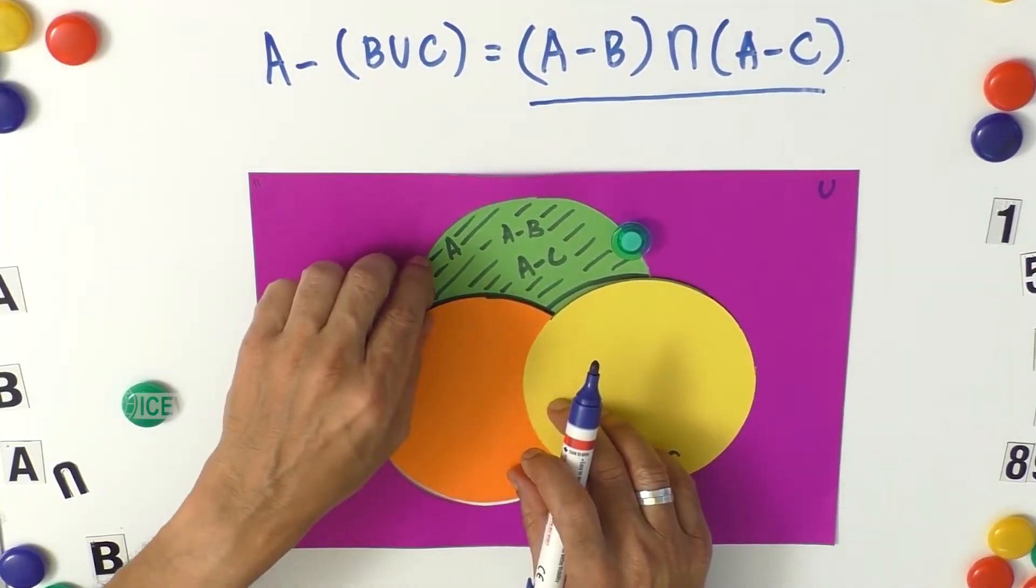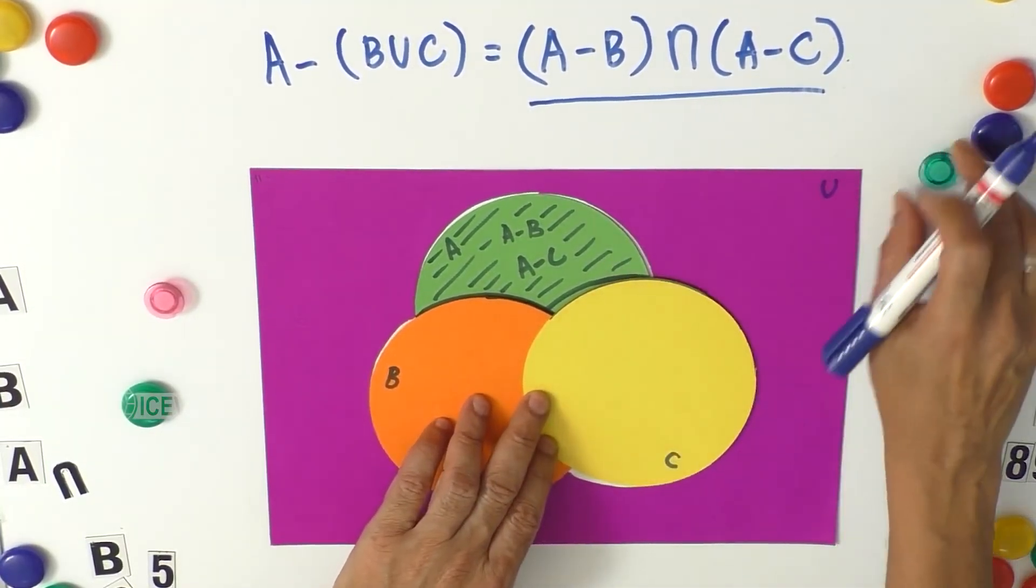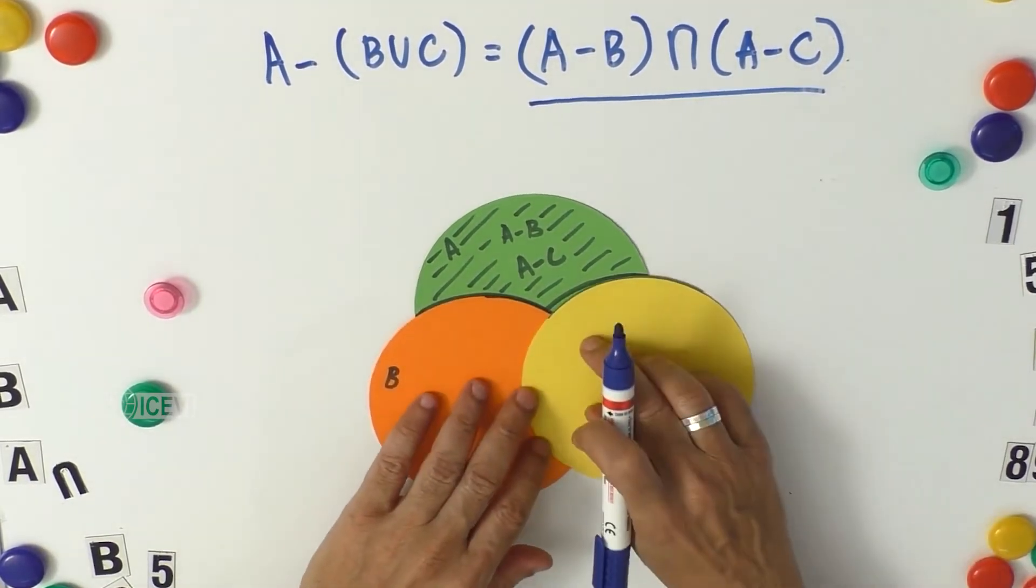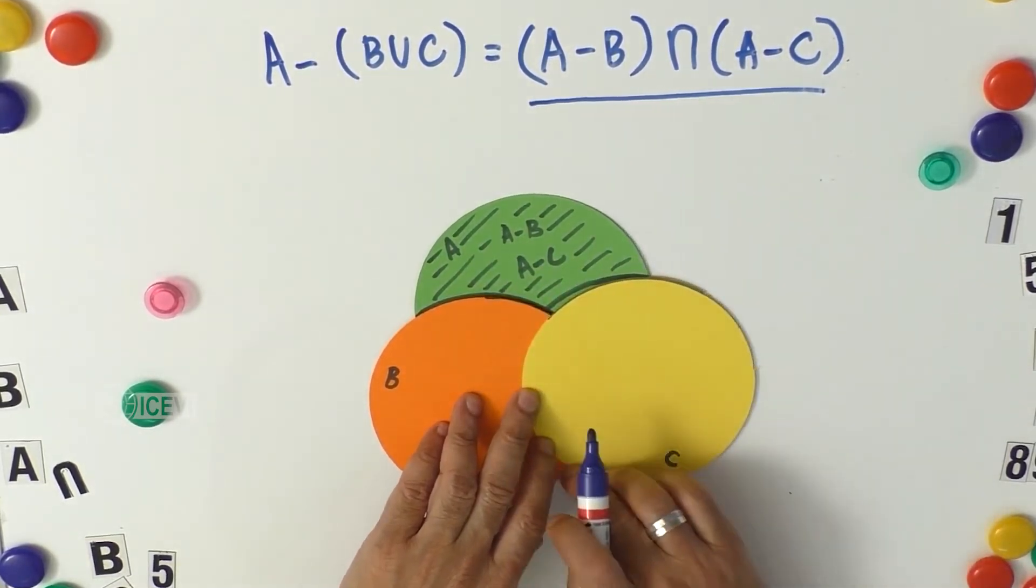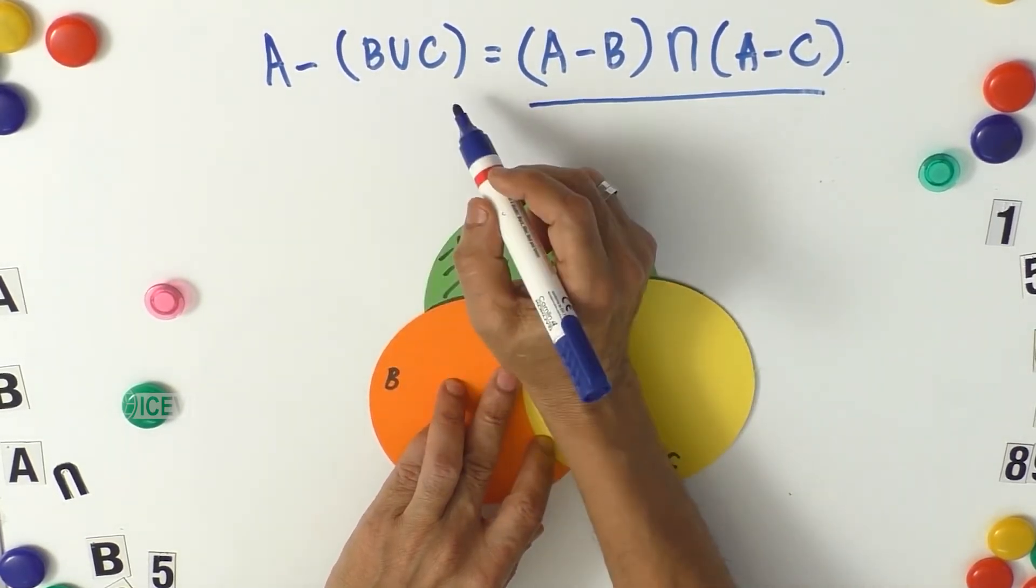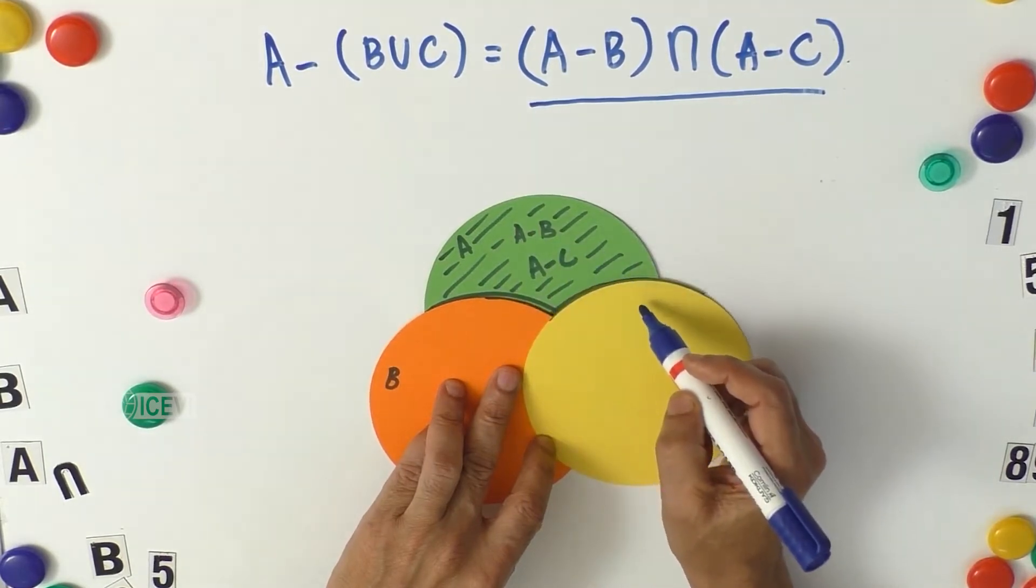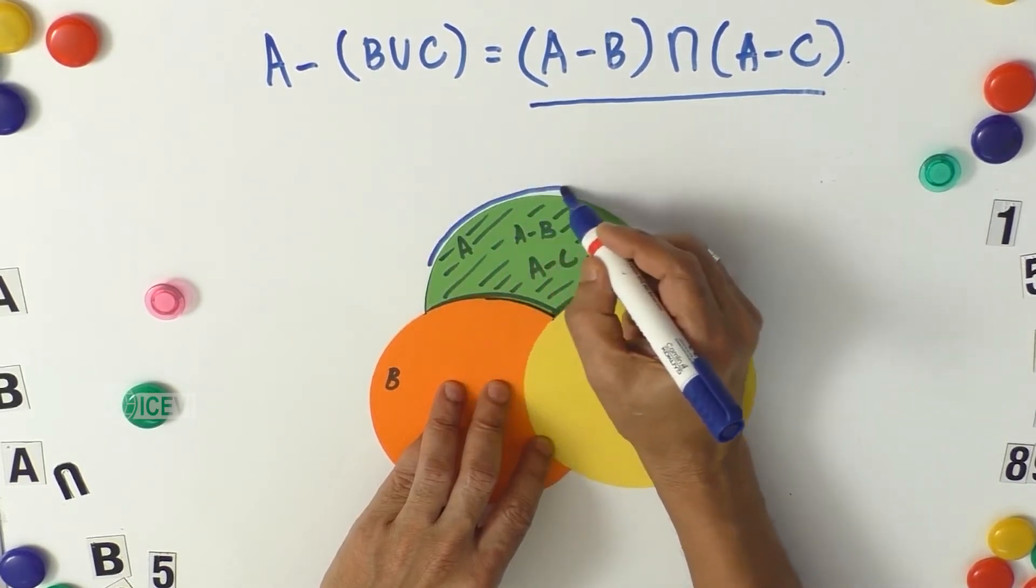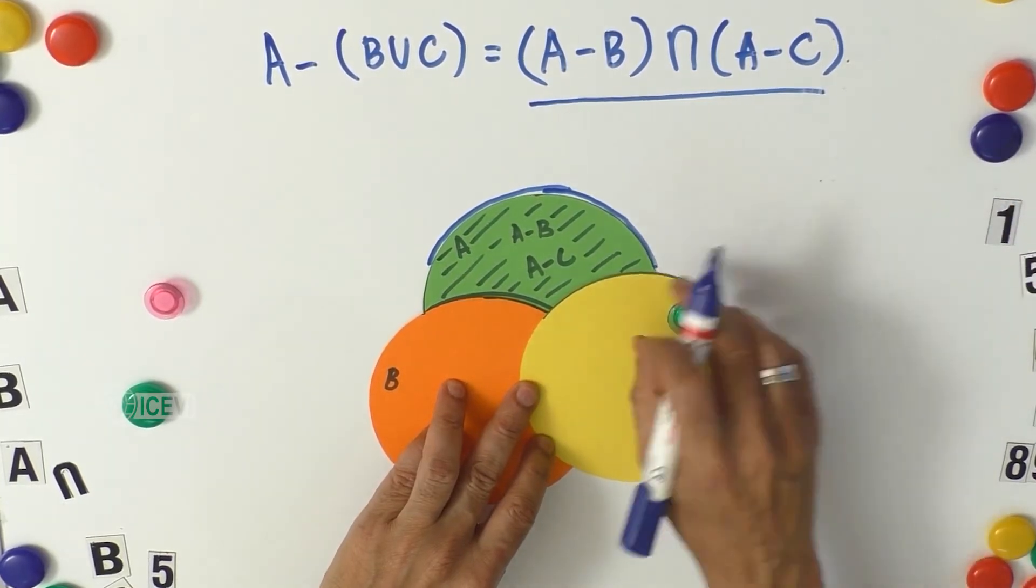Now we have to find out B union C. What is B union C? Let us take B union C. B union C is the whole portion. What is A minus B union C? That means the objects in A which are not in B union C. That again comes as the portion on top.